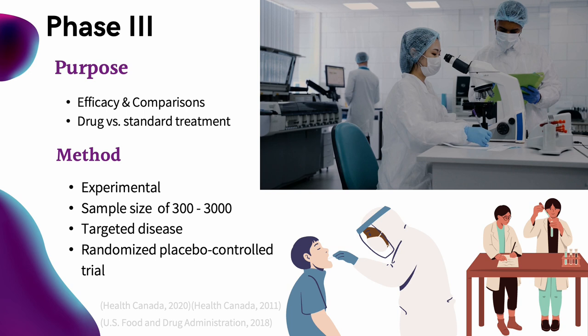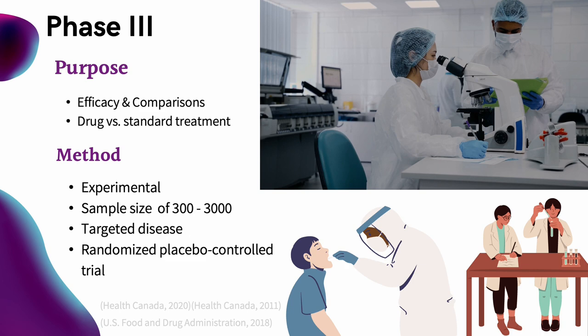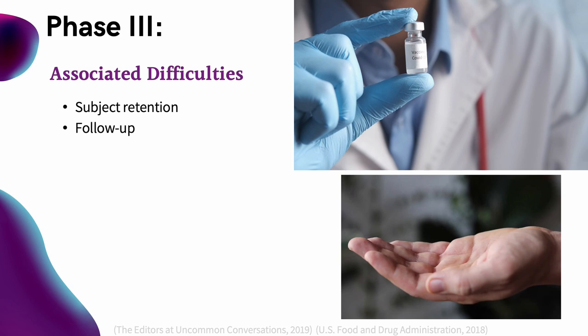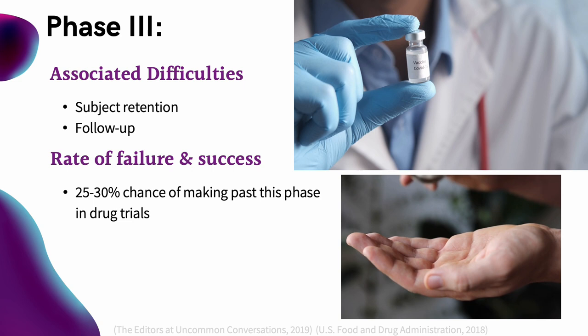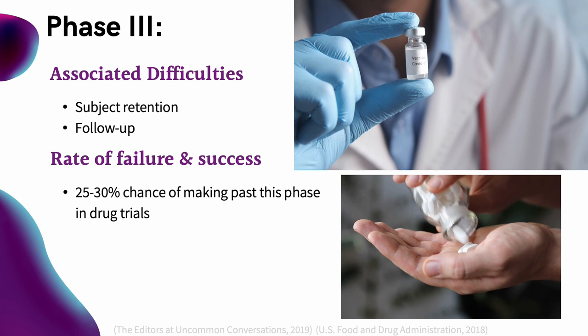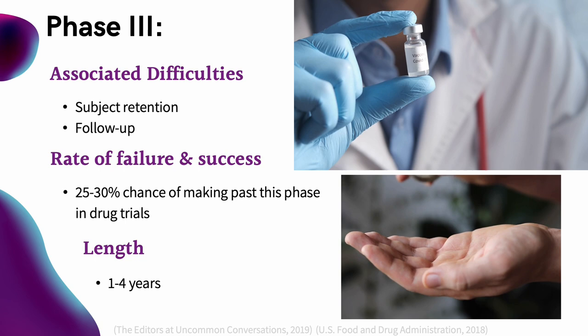Unknown to the randomly selected participants, the control group is administered the drug and the placebo group is administered the placebo. The main difficulties of this phase are subject retention and follow-up, as many participants are used. The FDA reports a success rate of 25 to 30% for Phase 3. Success in this phase results in the drug's release into the population. This phase has an average length of 1 to 4 years.